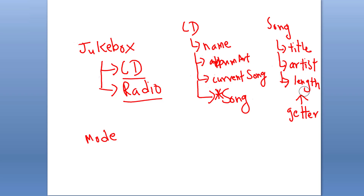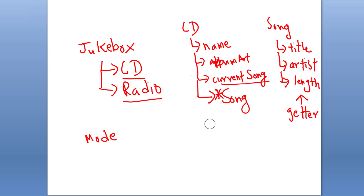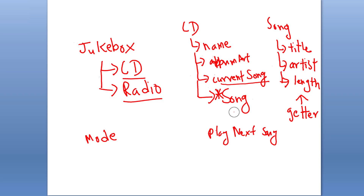For simplicity, the CD will track the current song by its index. When we construct the CD, we pass its name, album art, and songs. The current song index starts at zero. The only method we are going to add is play next song, which increases the current song index so we know which song is playing.